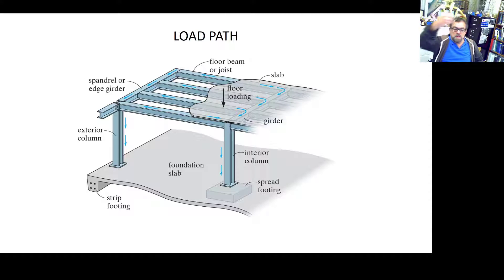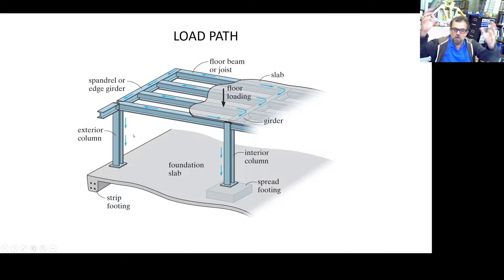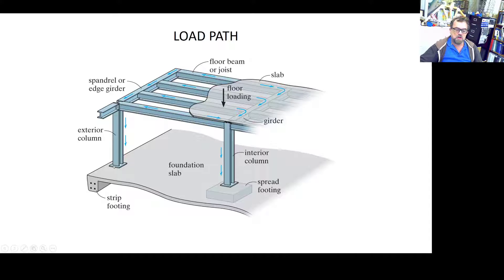Those floor beams distribute the load to the sides — to the girders. The girders receive the load from the joists, which receive it from the slabs, and the girders transmit those loads to the columns. The columns take all those loads and transmit them to the foundations, which distribute the load to the soil, to the ground.